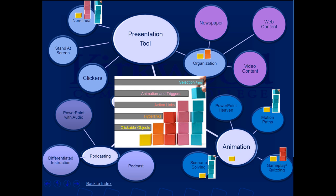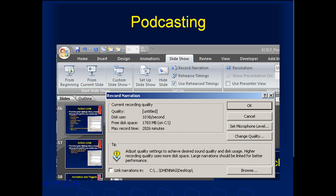Here's an overall map of techniques and where I use them. For nonlinear navigation, I use clickable objects, animation and triggers, and the Selection Pane. For organization, it's mainly clickable objects and hyperlinks. For motion paths and scenario solving, I need clickable objects and action links, plus the Selection Pane. For podcasting, it's just using the record narration button within Slideshow.